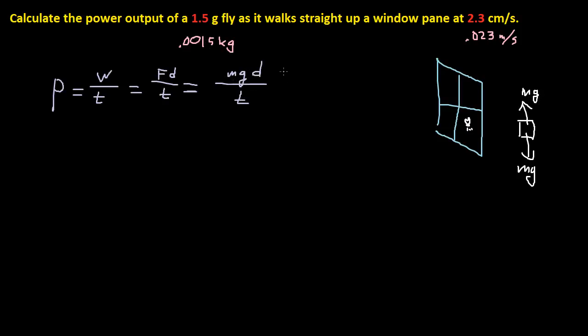So what is our M? Our M is 0.0015. And what is our gravity? Well, it's 9.8.